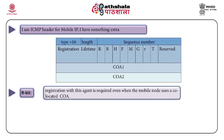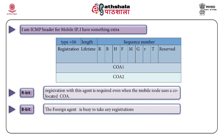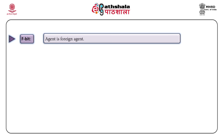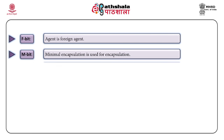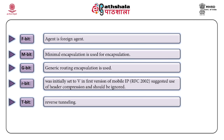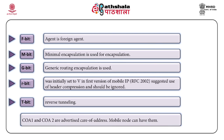The flag values in agent advertisements are: R-bit, indicating that registration with this agent is compulsory even if the mobile node uses a co-located care of address; B-bit, indicating the foreign agent is busy and cannot take any registrations; H-bit, indicating the advertisement is broadcasted by the home agent; F-bit and M-bit, indicating the nature of encapsulation — M is for minimal encapsulation and G is for generic routing encapsulation; and T-bit, which indicates reverse tunneling. The fields after flags indicate care of addresses available with agent advertisements.